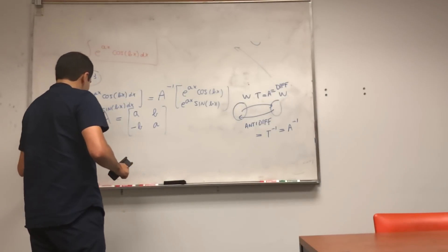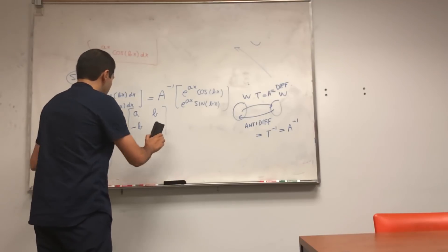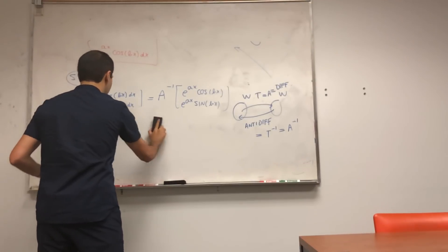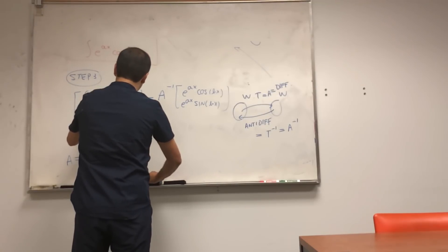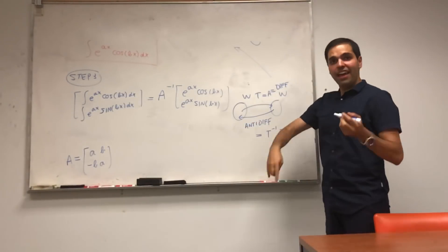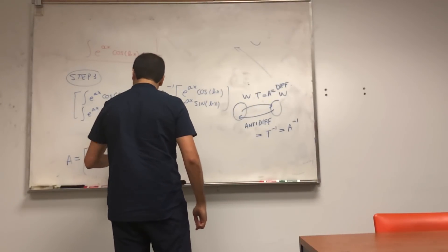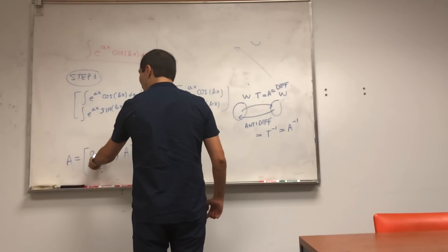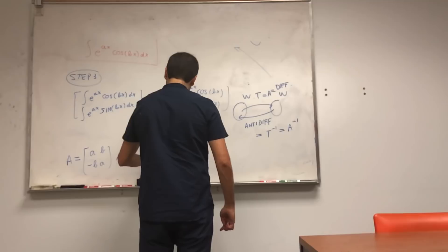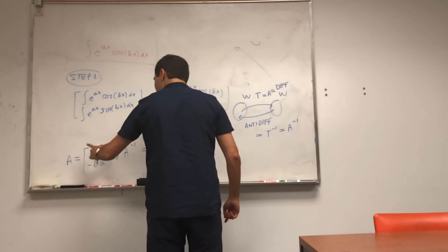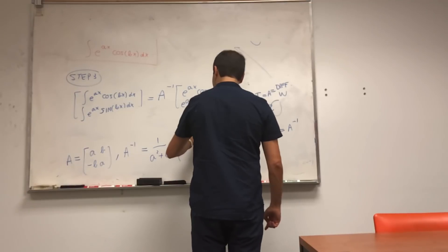A, let me write this and erase it, so a, b, minus b, a. That was A. Now to find A inverse, since it's 2 by 2, it's not bad. So it's 1 over the determinant, which is 1 over a squared plus b squared, and then you interchange the two things, a and a, and minus b, b.